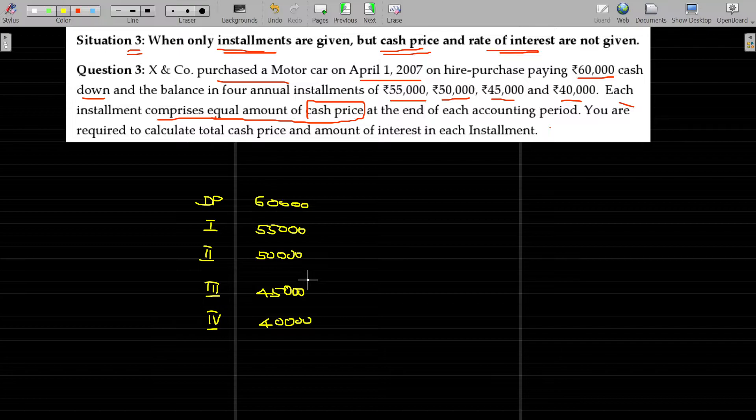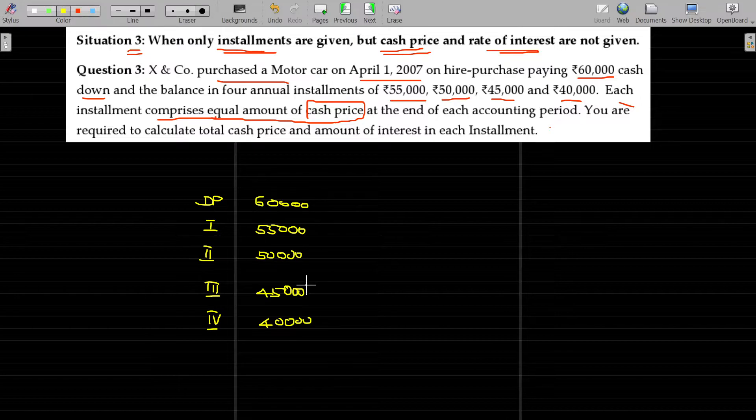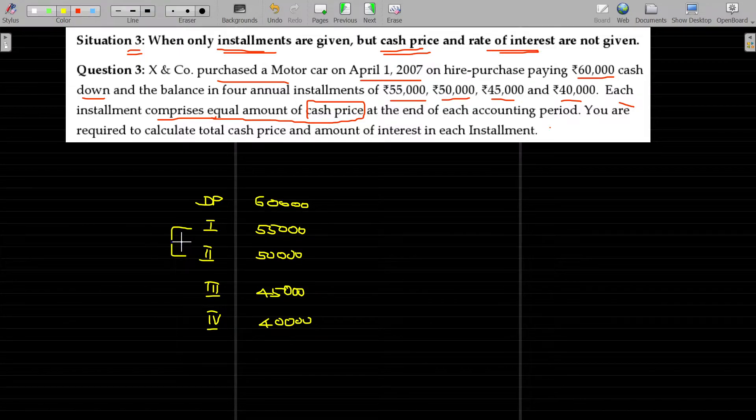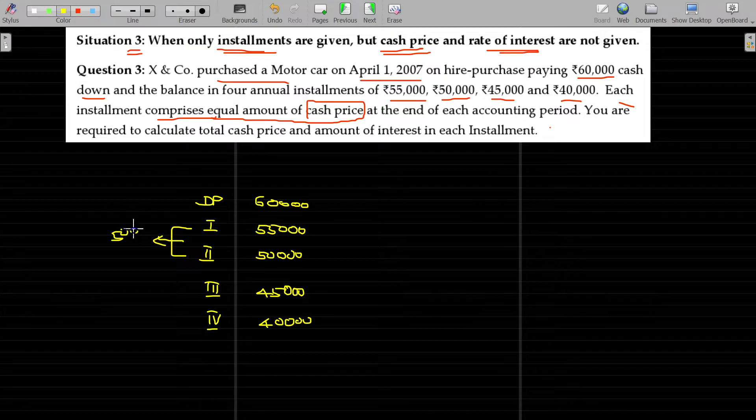And now, for the installments of 55, 50, 45, 40, the principal components remain the same. The difference between two subsequent installments will be the interest for the last installment.